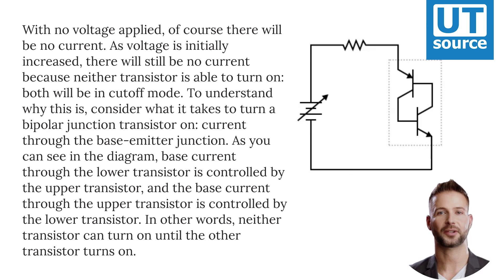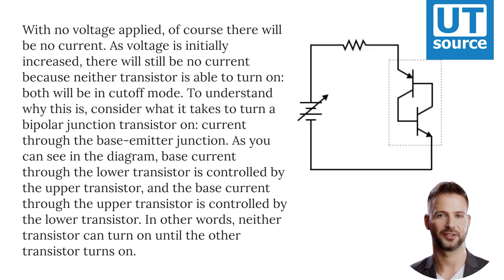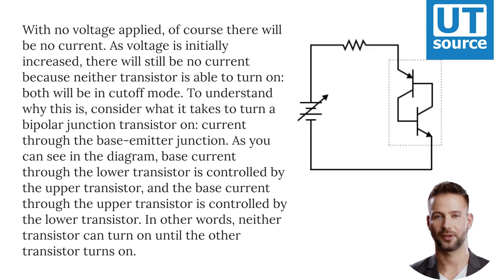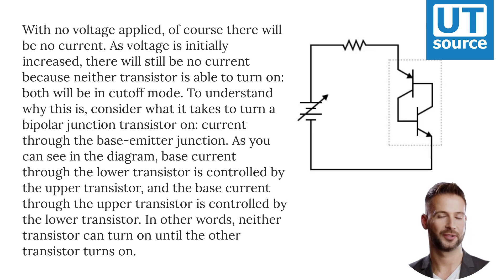Let's connect one of these devices to a source of variable voltage and see what happens. With no voltage applied, of course, there will be no current. As voltage is initially increased, there will still be no current because neither transistor is able to turn on. Both will be in cutoff mode. To understand why this is, consider what it takes to turn a bipolar junction transistor on: current through the base-emitter junction.